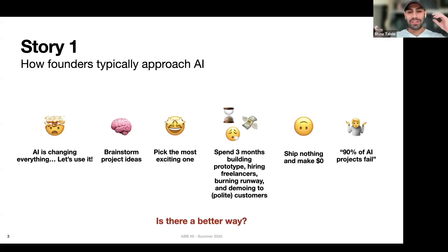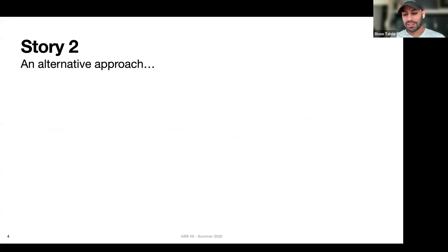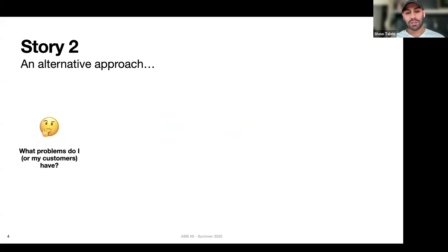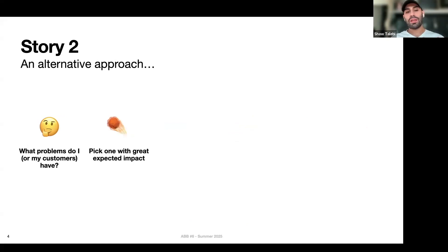But there must be a better way. Let's talk about another story — story two — an alternative approach to building with AI. Instead of starting with the excitement, start with the question: what problems do I have, or what problems do my customers have? From there, you can pick the problem with the greatest expected impact, which I'll talk about a little later.